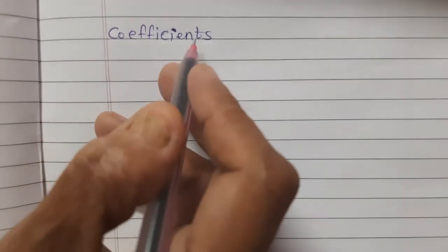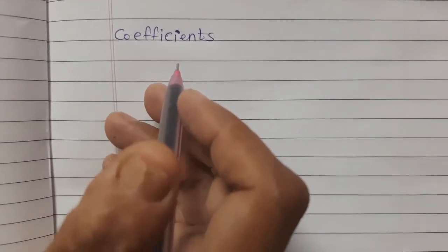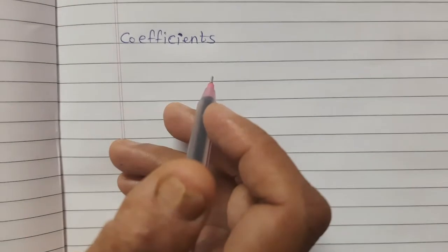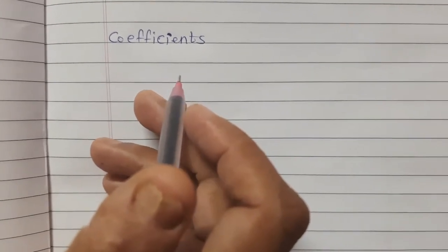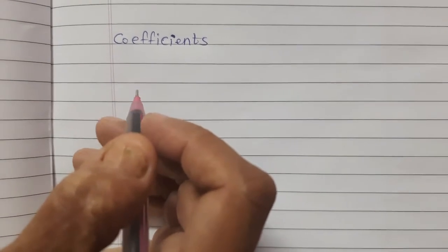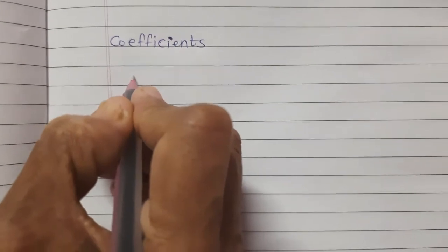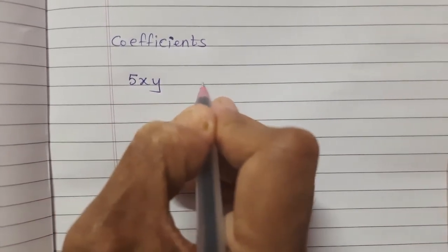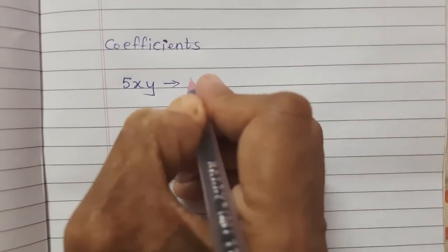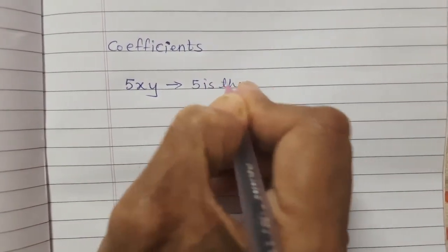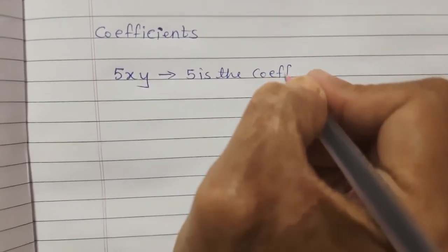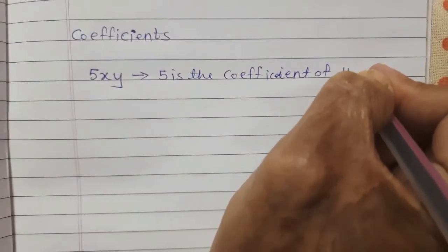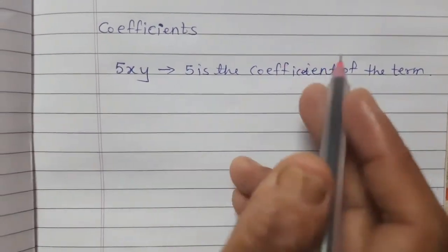Let's learn now about coefficients. We have learned how to write a term as a product of factors. One of these factors may be numerical and the other algebraic. The numerical factor is said to be the numerical coefficient, or simply the coefficient of the term. In 5xy, 5 is the coefficient of the term.